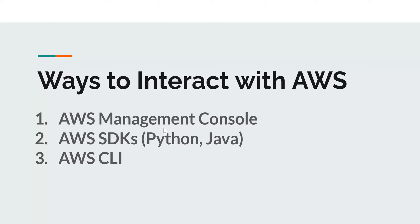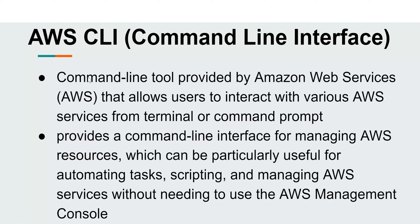The third way to interact with AWS is using AWS CLI. CLI is an interface that lets you run commands to interact with AWS services and perform various actions on those services.